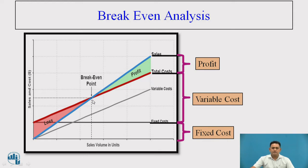The break-even point is obtained by the intersection of the two lines — the total cost and the sales. This point helps us identify the quantity of product which must be sold to give no profit and no loss. Your production should lie above the break-even point. If you are below it, you are in the loss zone.